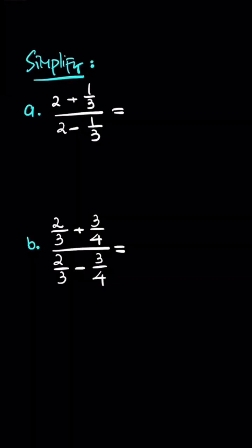Let's do these questions. We have fractions within fractions here and we have to simplify. For a: 2 plus 1 out of 3 divided by 2 minus 1 out of 3.